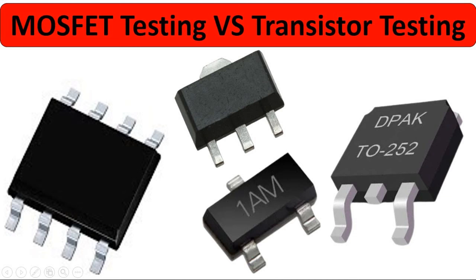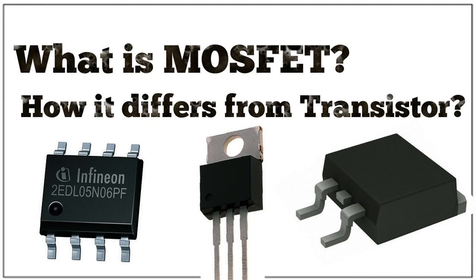MOSFETs are employed in power gating techniques, where sections of a circuit are selectively turned off when not in use, reducing power consumption by cutting off the power supply to inactive parts. They are also used in circuits implementing Dynamic Voltage and Frequency Scaling, DVFS, where the operating voltage and frequency are dynamically adjusted based on the workload. MOSFETs with low on-resistance minimize power losses due to resistive heating, and their rapid switching reduces the time they actively consume power.